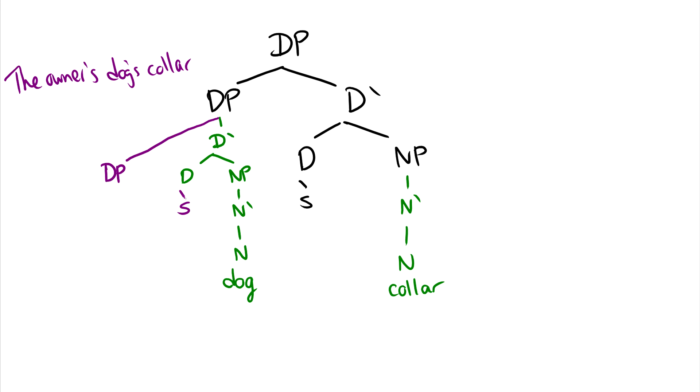In this case, we now have another possessive S beside this dog. And we can just do the same thing. D, D is the. And then NP, well, the owner is the head of the noun phrase. So this would be the owner's dog's collar.